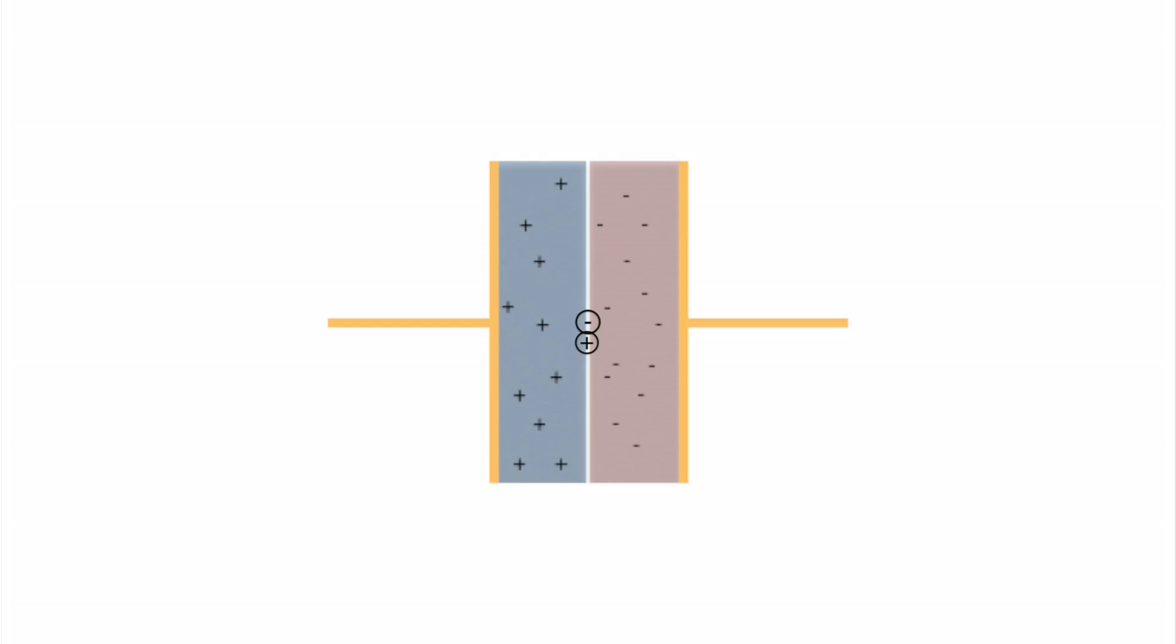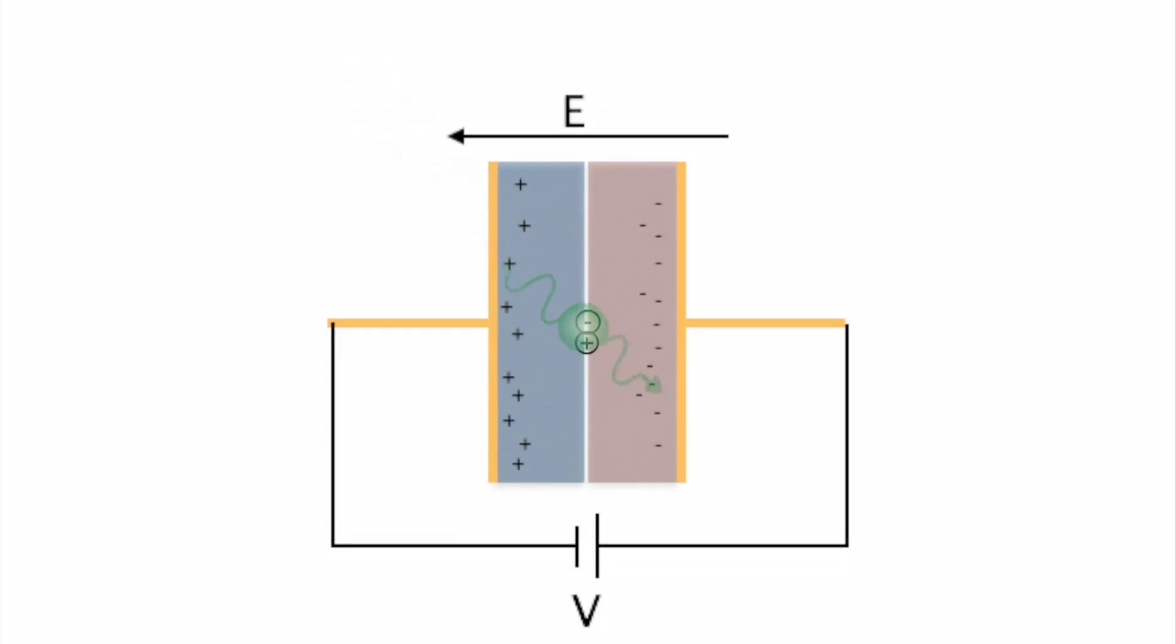Normally, these charge carriers would quickly attract each other and recombine, but in the presence of a strong electric field, they can be accelerated away from each other, inducing a current through the junction.